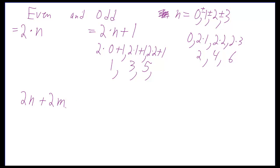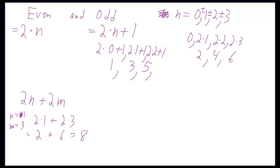For example, maybe n was equal to 1 and m is equal to 3. Well, if that was the case, then you would have 2 times 1 plus 2 times 3, and this would be 2. The other one would be 6, and your answer is 8, which we know is an even number.